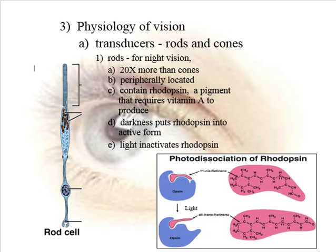The rods contain a pigment called rhodopsin, and in order to make rhodopsin, you need a vitamin. Vitamin A. So in order to make rhodopsin, you've got to have vitamin A.